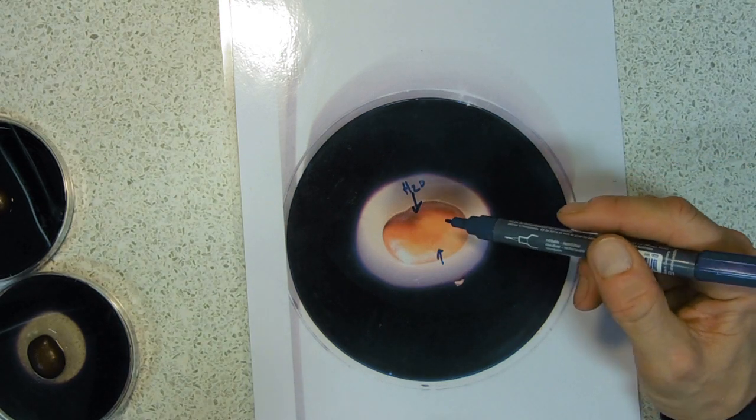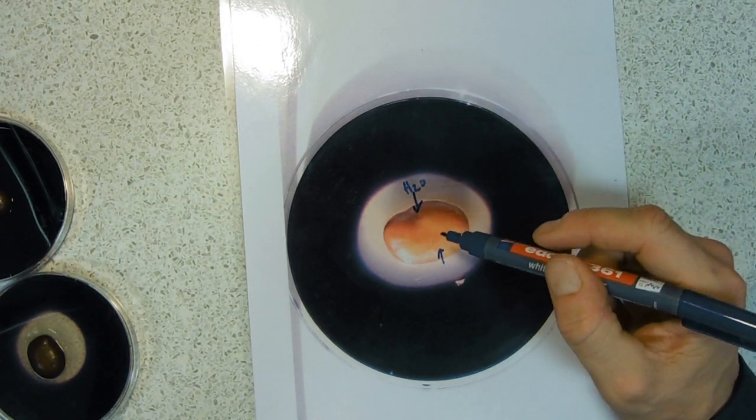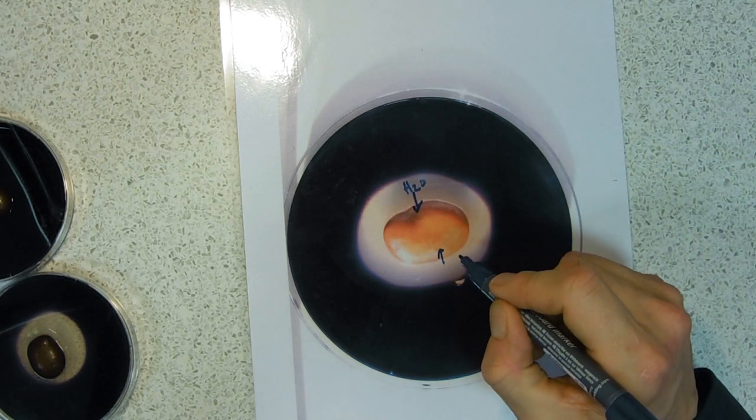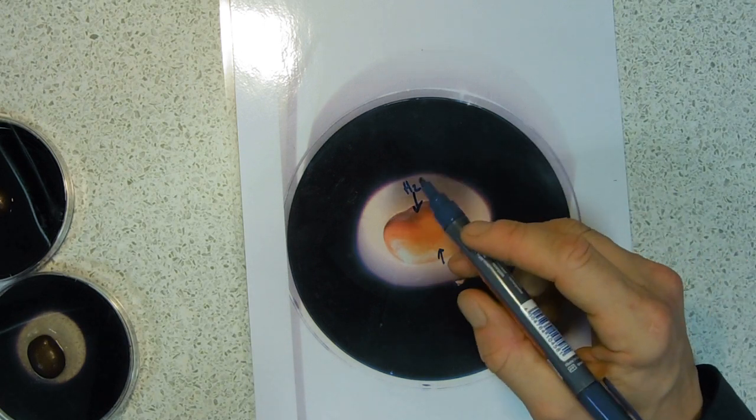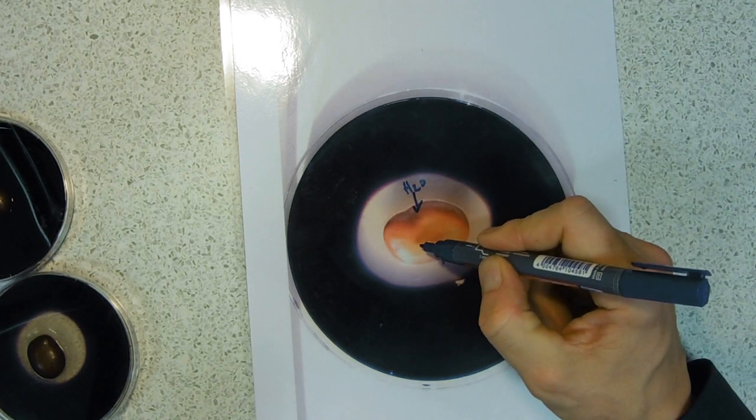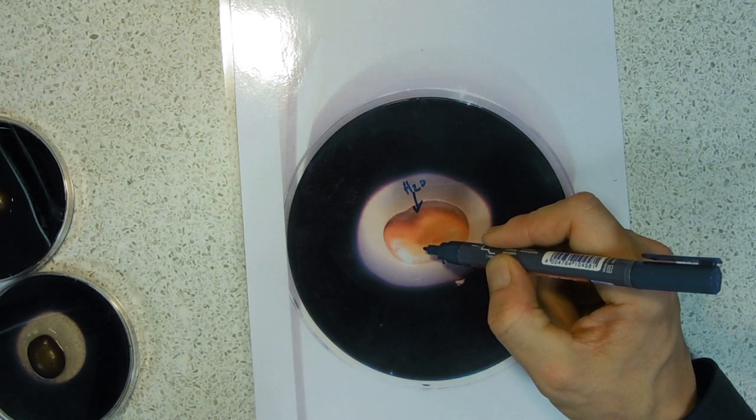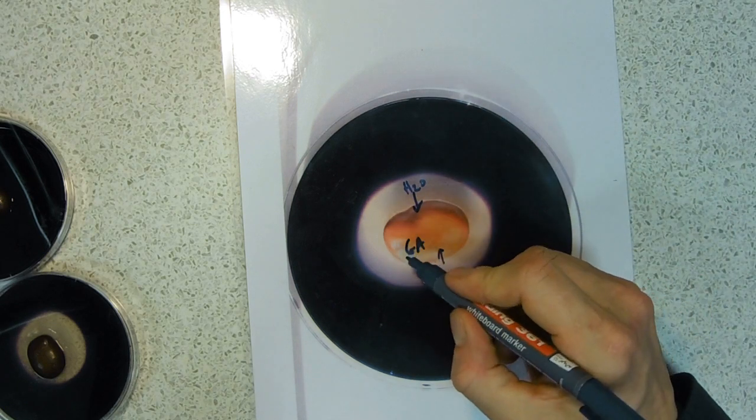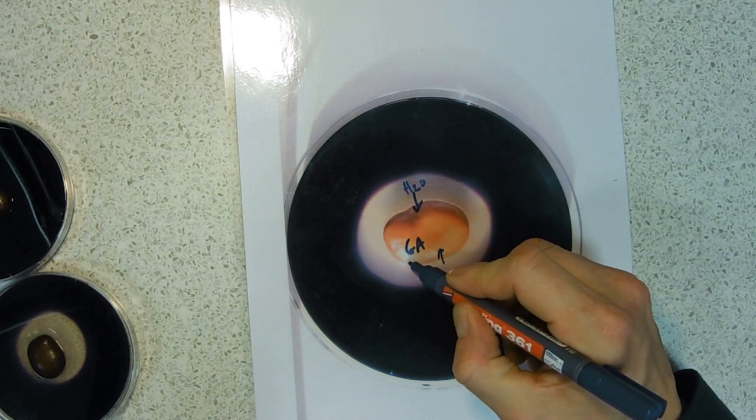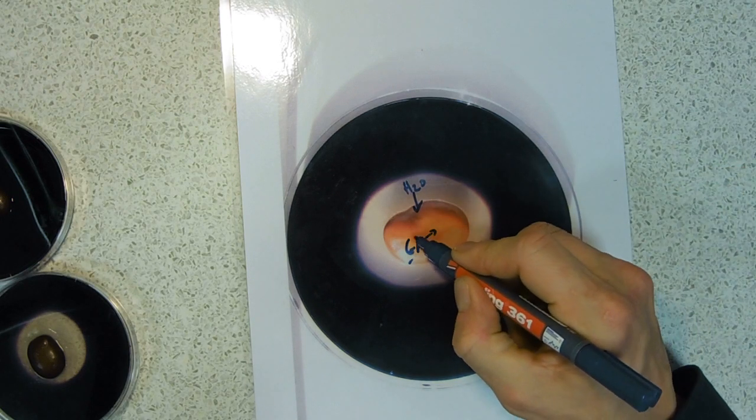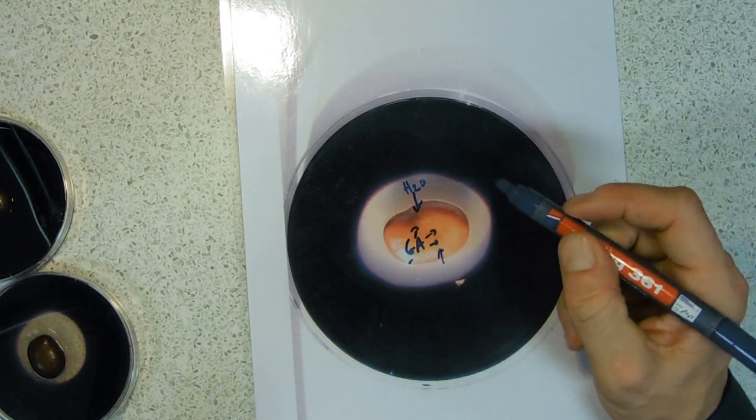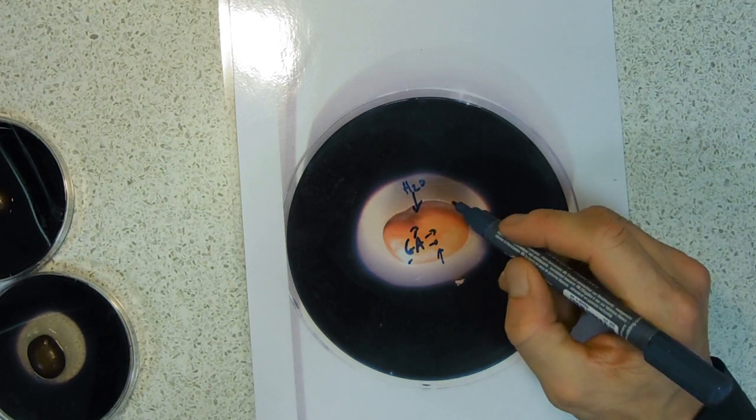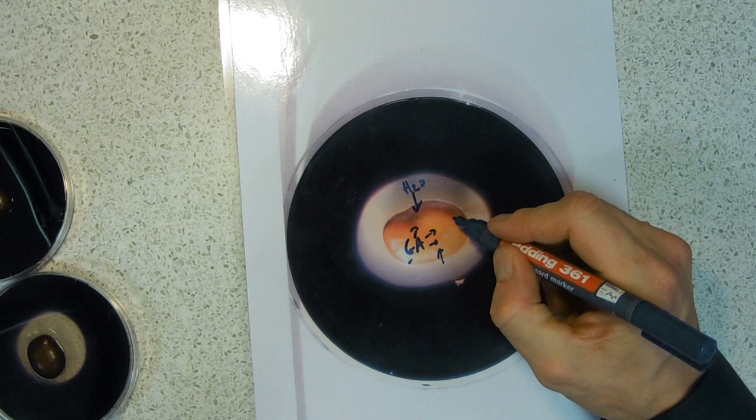What water does inside this seed is it mobilizes the plant hormones, the growth regulators, for example gibberellin or gibberellic acid (GA). That will then dissolve and be able to move throughout this seed, and then that will activate the production of amylase.